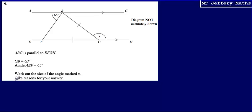The important bit here is 'give reasons for your answers.' Generally speaking, if you have an angle reasoning question where you're asked to find an angle using angle facts, half of the marks are given to the reasons. So I like to follow a format whereby I state what an angle is and then give the reason why — what angle fact have I used?